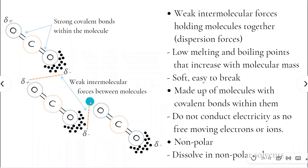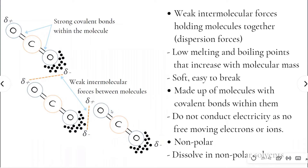When a temporary dipole is created, the electrons of the molecule next to it are attracted to this positive end. So the electrons in the next molecule move to one end, creating what's called an instantaneous dipole — it happens in an instant when the molecule next to it gains a temporary dipole. This leaves that molecule with a slightly negative and a slightly positive end, which causes the molecule next to it to gain an instantaneous dipole.